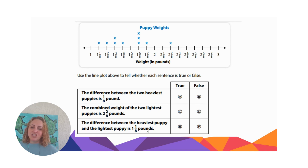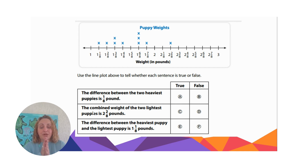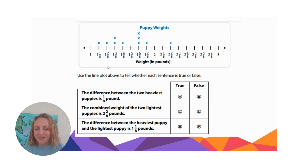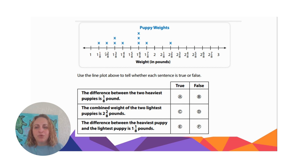Next: the combined weight — when we combine we add — of the two lightest puppies is two and two eighths. Pause and answer. When I add one and one eighth plus one and two eighths, one eighth plus two eighths is three eighths, and one plus one is two. So the combined weight is two and three eighths, not two and two eighths. That one is false too.